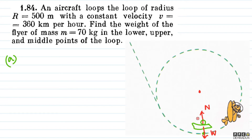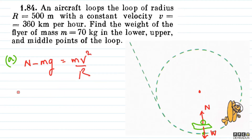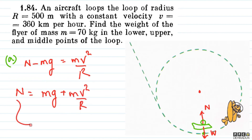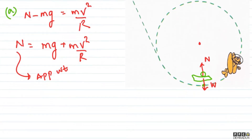Because the speed is constant, we can write the equation: Normal minus mg equals mv squared divided by r. So Normal N equals mg plus mv squared upon r. This N is the apparent weight. We need to calculate this value.